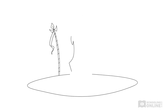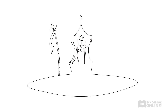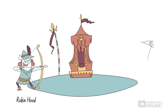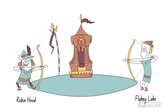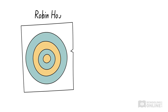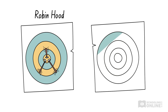To help us understand reliability, let's return to our archery competition. Robin Hood and his competitor, Fluky Luke, each have three arrows to fire at their targets. As usual, Robin Hood hits the bullseye with each of his three shots.